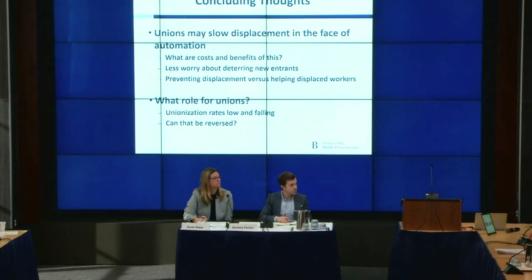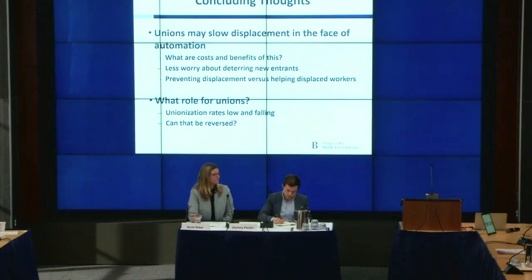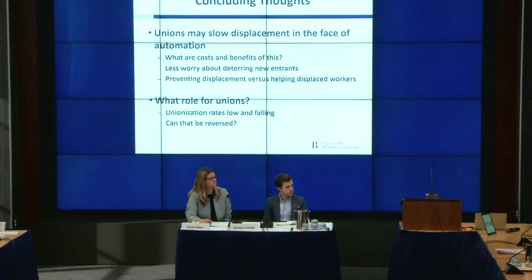A comment from Jim: we need to be careful about identifying changes in jobs for routine workers with automation, as there are other factors at play. For instance, automation only reduces the amount of retyping by about 20% — what really happened with secretaries and typists was a shift of work to managers and professionals. Similarly, the travel agent wasn't automated away; it was a shift of work to the consumer. When we think about unions or macroeconomic policies, we need to think about other things affecting routine workers aside from just technology.